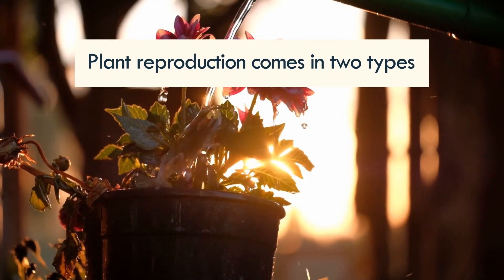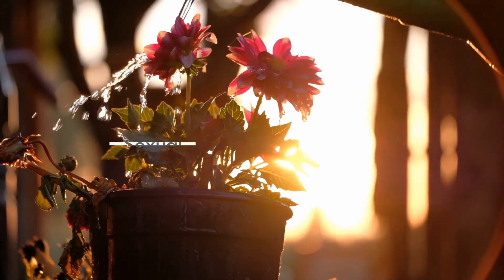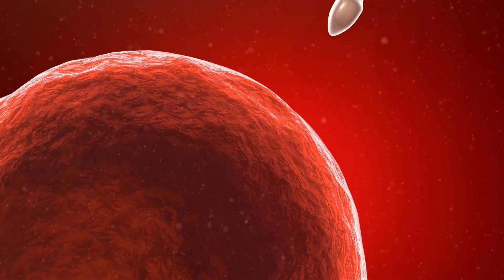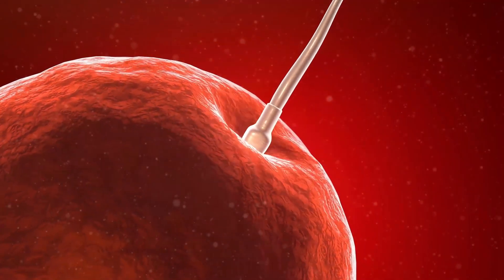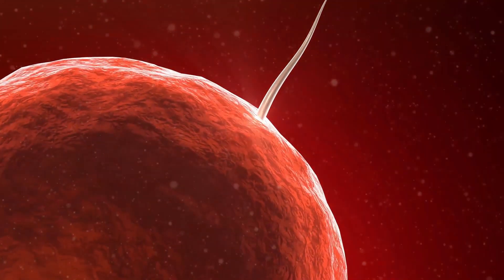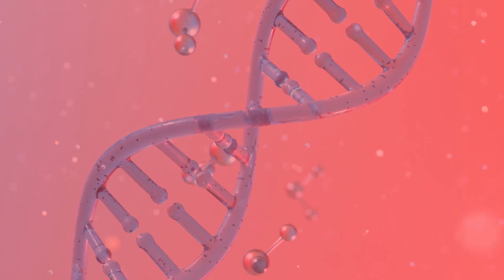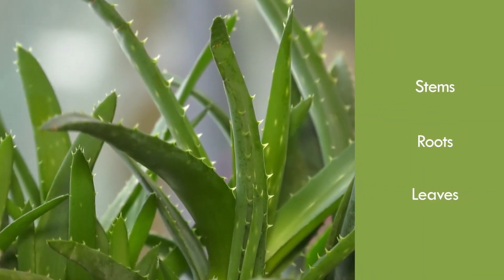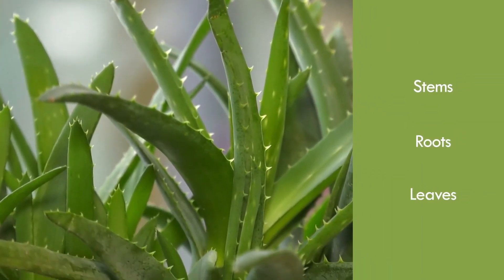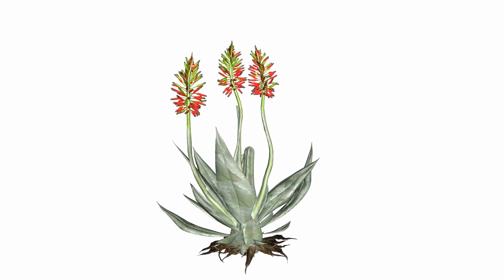Plant reproduction comes in two types: sexual and asexual. Sexual reproduction is similar to human reproduction, in which male pollen and female ovarian germ cells fuse into a new organism that inherits the genes of both parents. Asexual reproduction involves vegetative reproduction through stems, roots, and leaves. Essentially, the parent plant regenerates itself by using a part of itself.